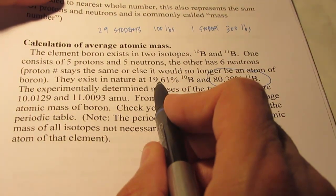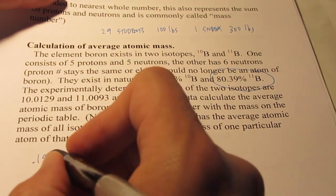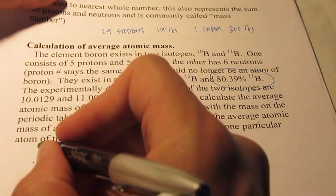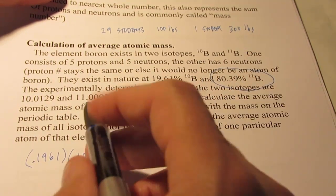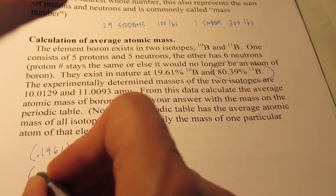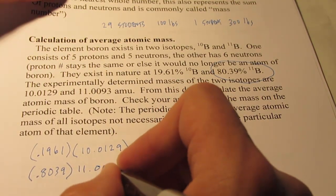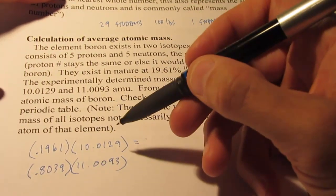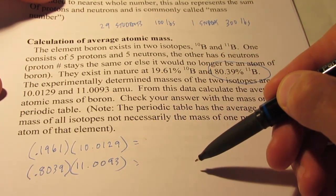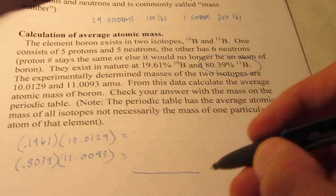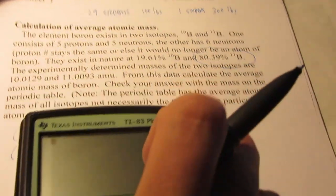This is how we do this. We will take 19.61% of the boron-10's mass, multiply by the decimal equivalent .1961, times the mass of that isotope. Then I will take 80.39%, its decimal equivalent .8039, times the mass of 11.0093. I will get 19.61% of boron's average mass and 80.39% of boron's average mass. When I add them together, I will get 100% of boron's average mass.